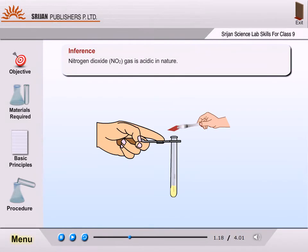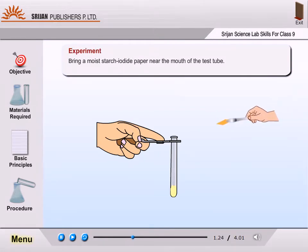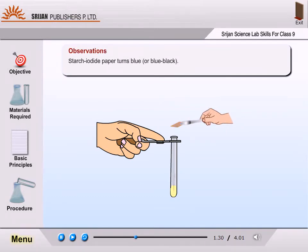Nitrogen dioxide gas is acidic in nature. Bring a moist starch iodide paper near the mouth of the test tube. Starch iodide paper turns blue or blue-black.